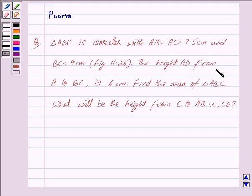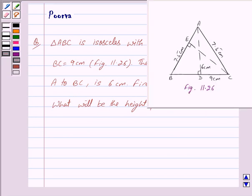The height AD from A to BC is 6 cm. Find the area of triangle ABC. What will be the height from C to AB, that is CE? We are given this figure. Let us now begin with the solution.